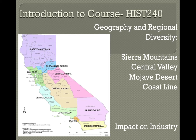Asian ethnic enclaves such as Japantown, Chinatown, Little Manila, and Little Saigon are dotted throughout California's urban and suburban areas.